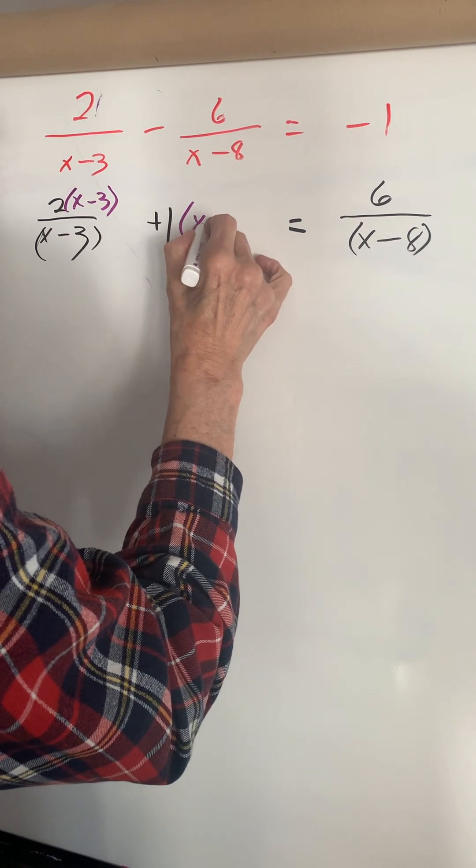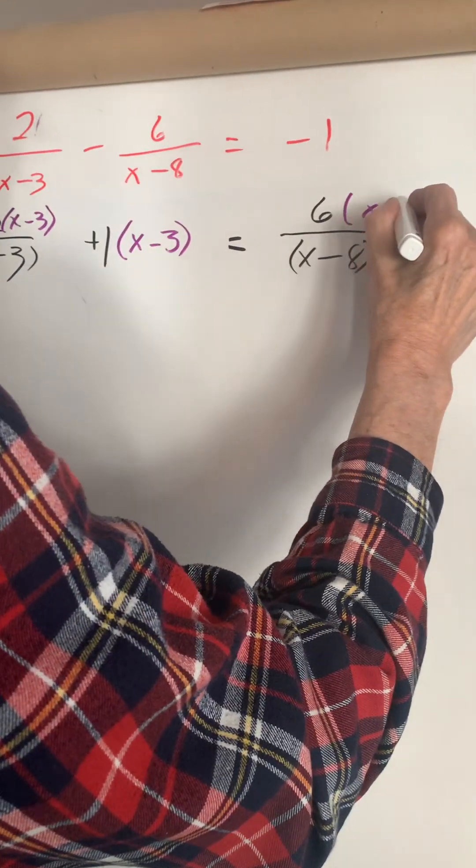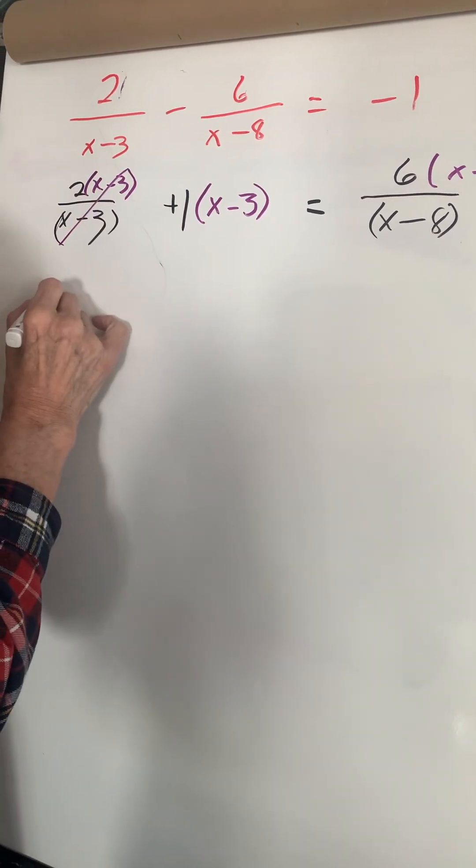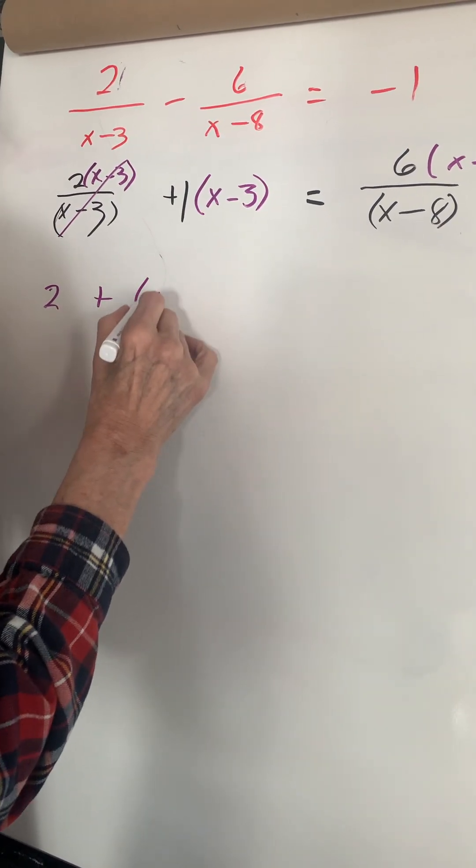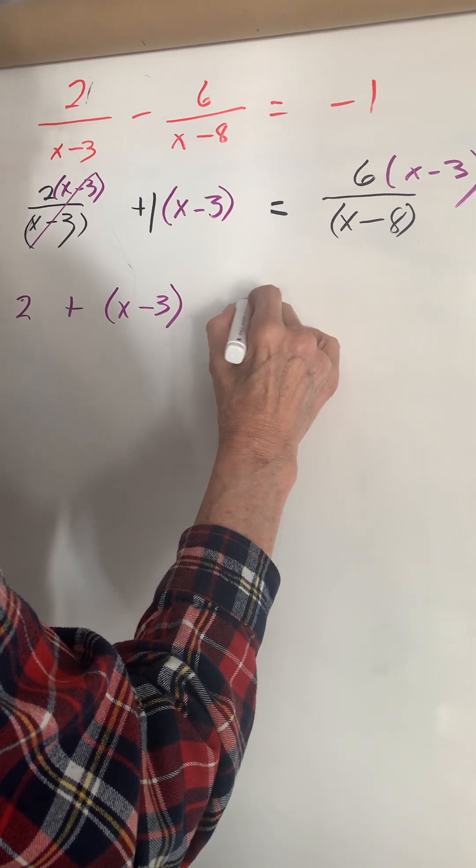So this cancels and I'm left with 2 plus x minus 3 equals 6 times (x minus 3) over (x minus 8).